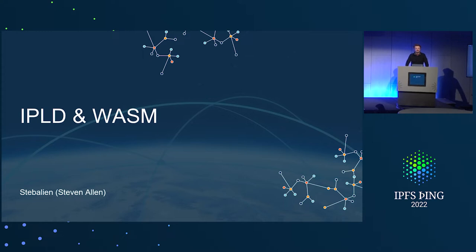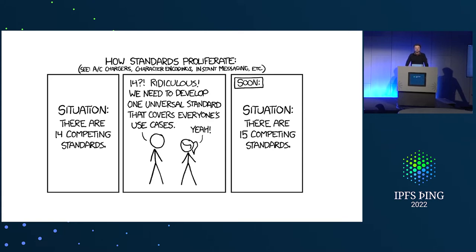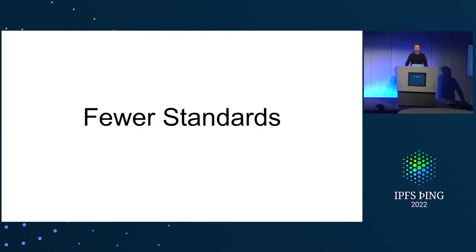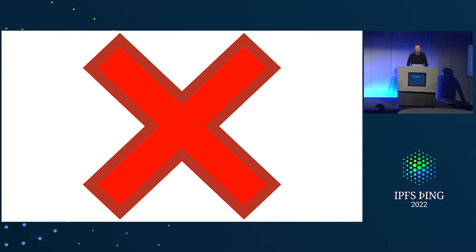The frustration I've always had with everything we do here is: I build a protocol and I'm not happy with it, so I build another one. It's the 14-standards problem — someone builds something and it's not going to work for you, because you need to build another one. People are not going to stop making standards because they need new things. We can't just say no more standards.